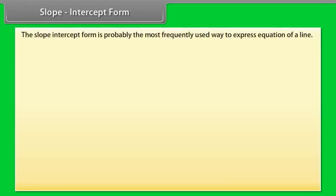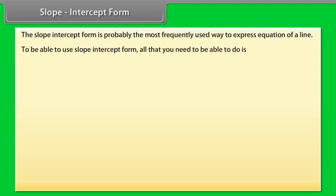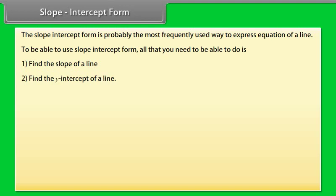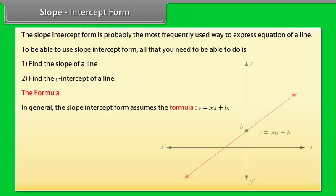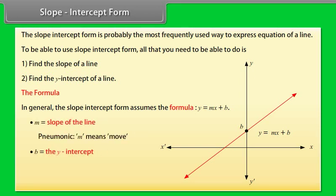Slope-intercept form is probably the most frequently used way to express the equation of a line. To use slope-intercept form, all you need to do is find the slope of a line and find the y-intercept of a line. In general, the slope-intercept form assumes the formula y = mx + b, where m is the slope of the line and b is the y-intercept.